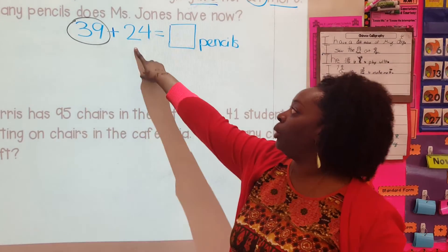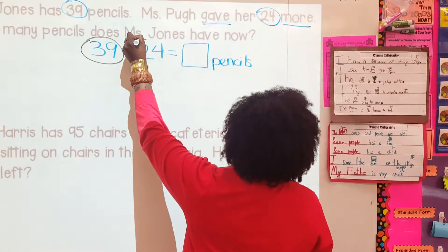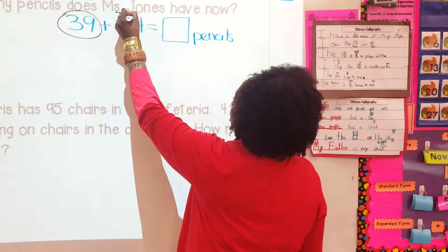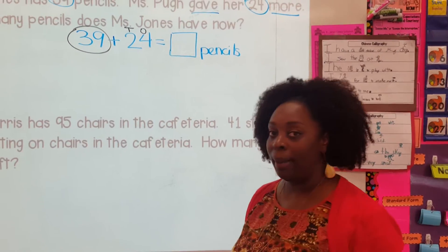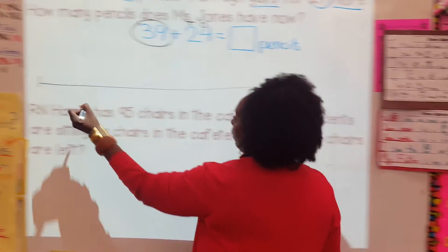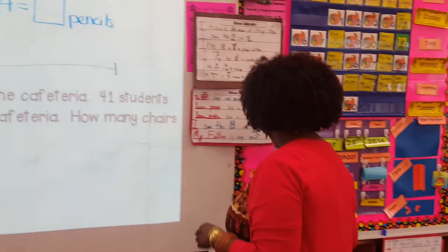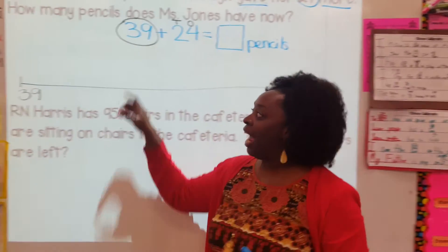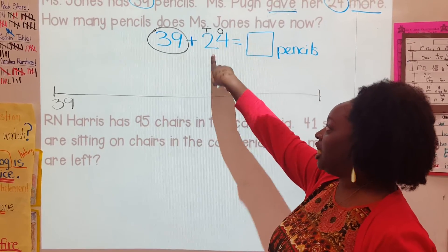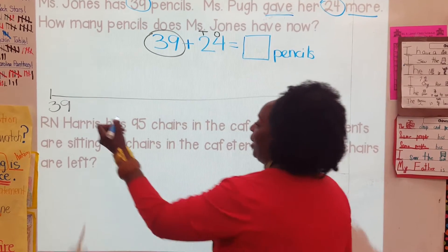Let's look at the next number: 24. How many tens does 24 have? There's a 2 in the tens place. And how many ones? There's a 4 in the ones place. So we're going to show our number line starting on 39. The reason we do it this way is because I want you to get in the habit of trying to make your problem solving a little bit easier. So let's look at our tens place — how many tens do we have? 2 tens, so we're going to do 2 big 10 jumps.